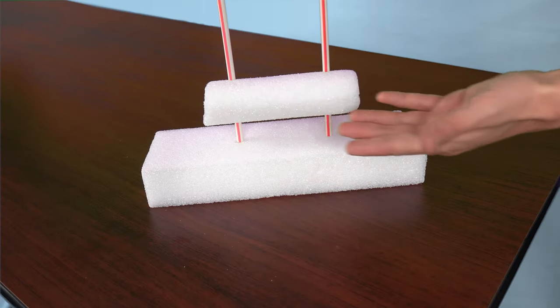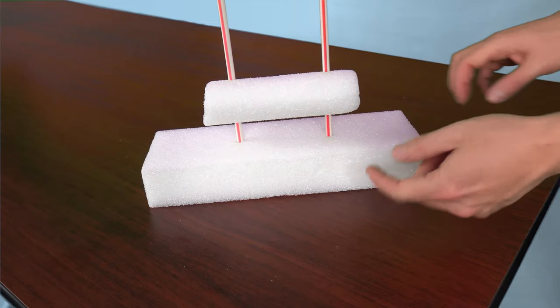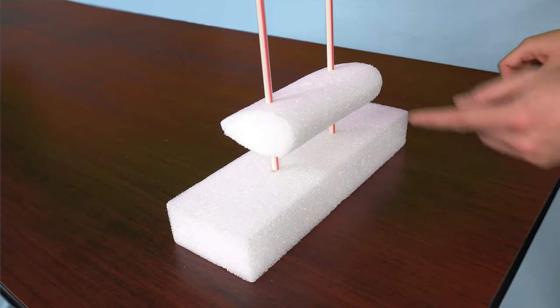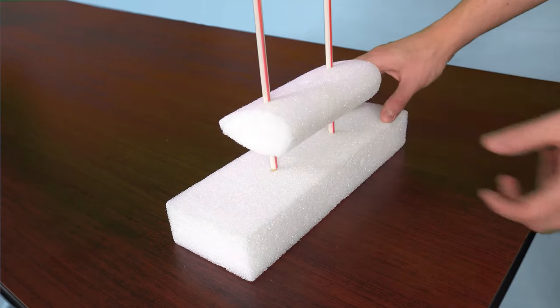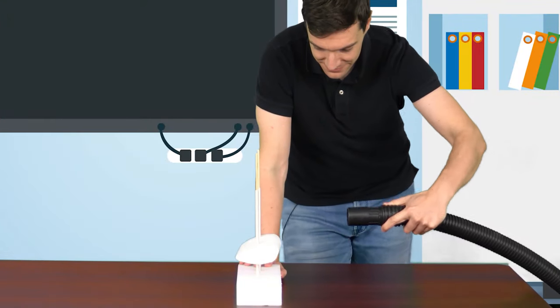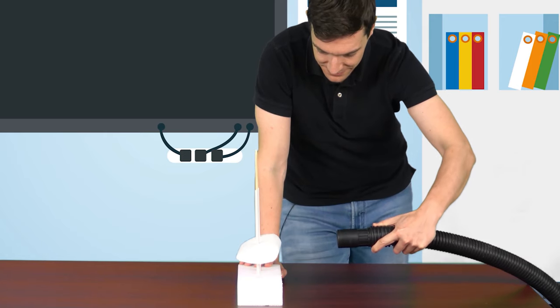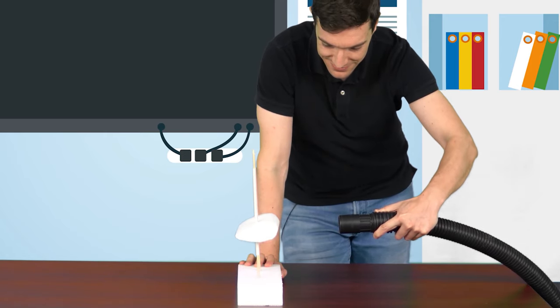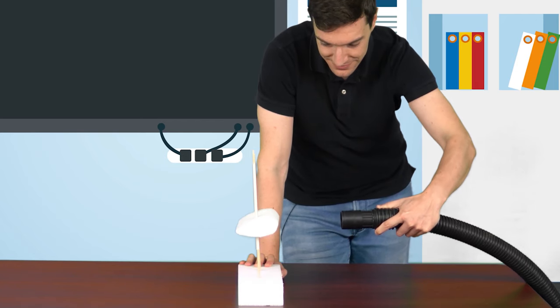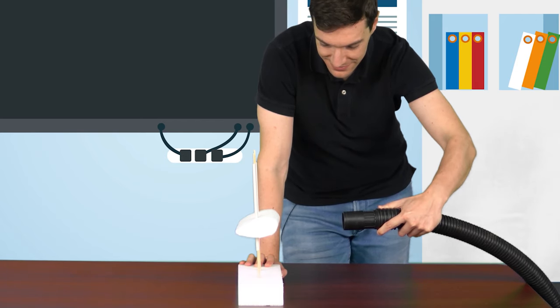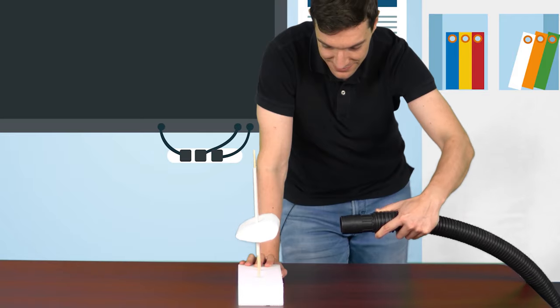This is a model of a wing, made with foam, and attached to two rods. If we turn on the blower, we can see that the air around the wing lifts up the model, due to the pressure difference on the top and the bottom sides of the wing.